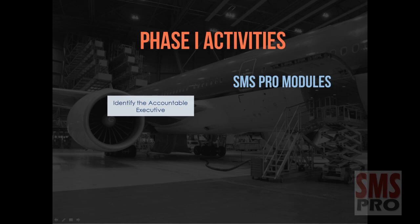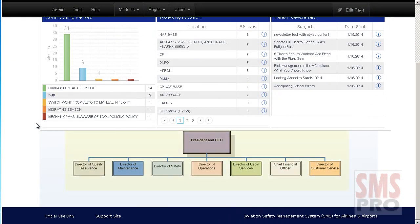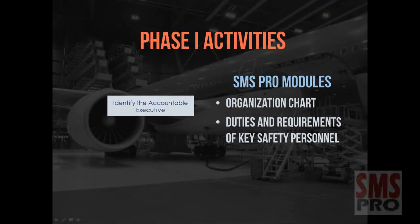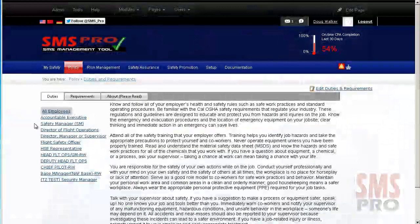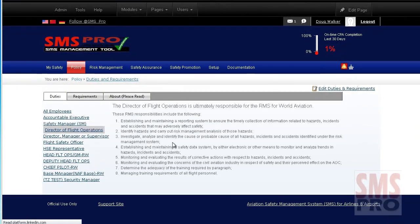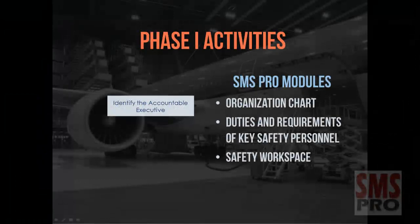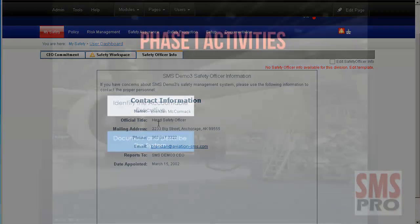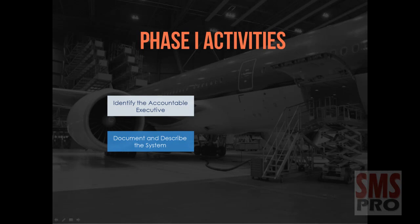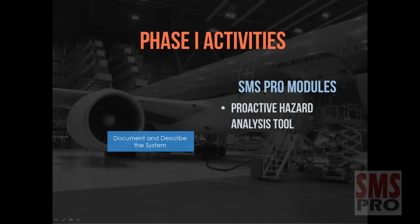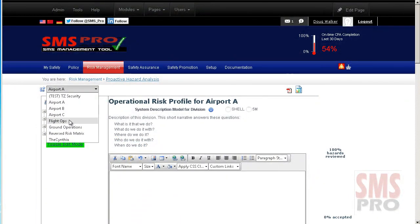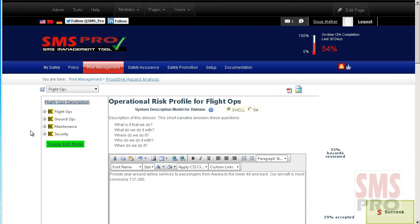Using SMS Pro, this can be achieved through the organization chart module and the duties and requirements of key safety personnel module, where descriptions of responsibilities can be easily viewed and updated. In the safety workspace of the dashboard, you can find the safety officer information. Documenting the safety management system can be achieved through the proactive hazard analysis tool, where the system can be described using either the SHELL or the 5M models.